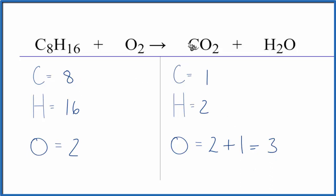Let's start by putting an 8 in front of the CO2. 1 times 8, that gives us 8. So we've just balanced the carbons. Let's update the oxygens. We have 8 times 2 is 16, plus the 1. Now we have 17.